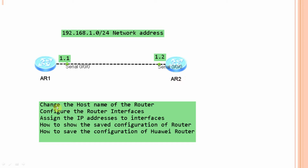These are the steps we will complete: first, change the hostname of the router; second, configure the router interfaces — we need to assign IP addresses to the interfaces and bring up both router interfaces; third, show the saved configuration; and finally, save the configuration of the Huawei router. Watch this video till the end and you will learn a lot.